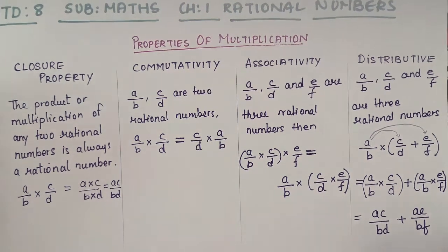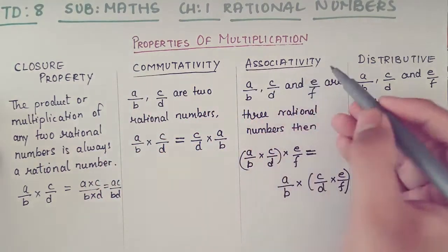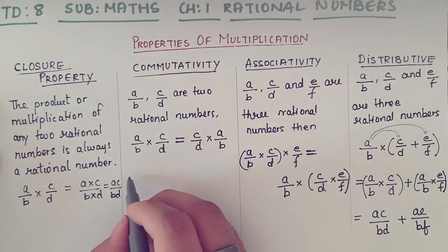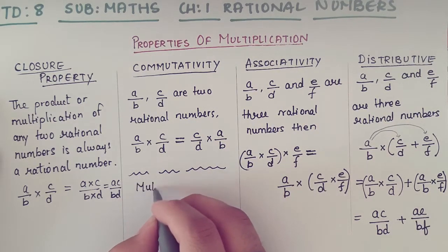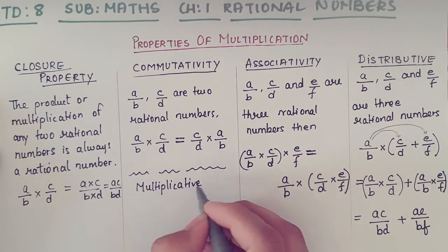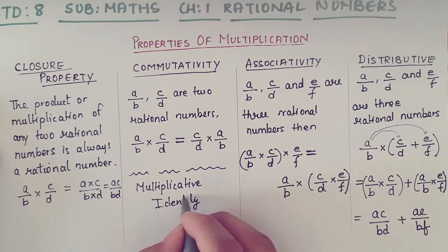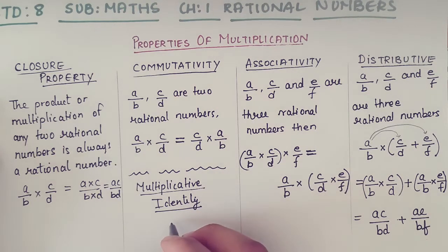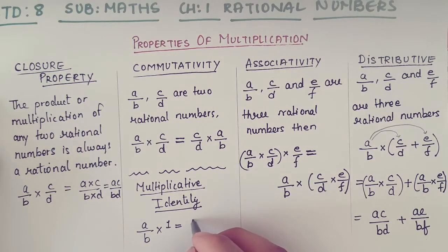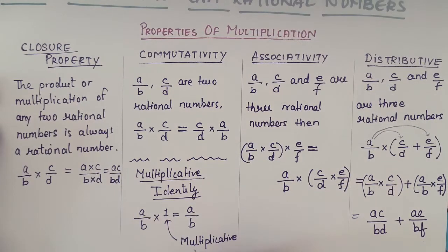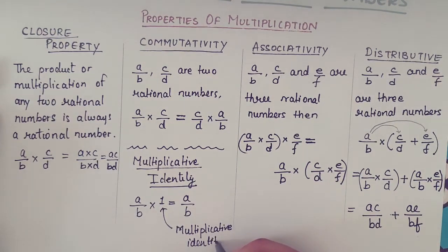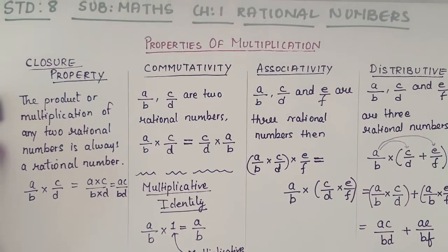We also have one more property — multiplicative identity. The multiplicative identity is 1. So if I multiply a/b with 1, I will get the same answer a/b. Therefore, 1 is the multiplicative identity. I hope you have understood this concept. Thank you.